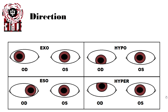Another common horizontal deviation is ESO, or esophoria. ESO is when one eye is turned in relative to the other eye. In this case, in the lower left-hand corner, we see the right eye is turned in compared to the left eye. The left eye is fixating on a target; the right eye is not — it is turned in.